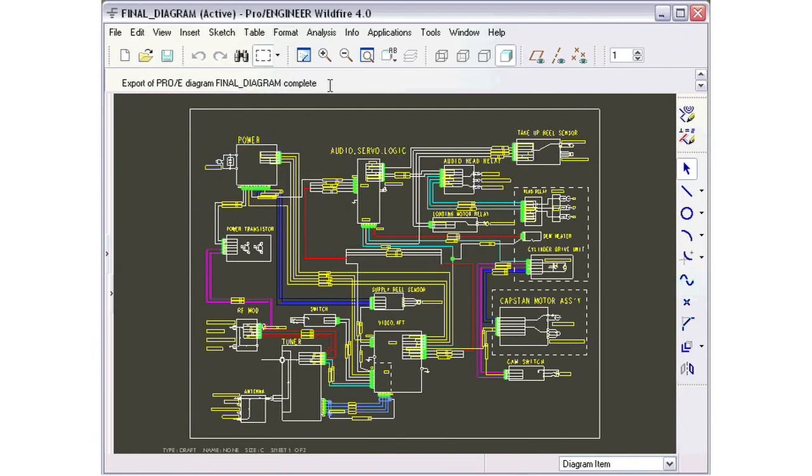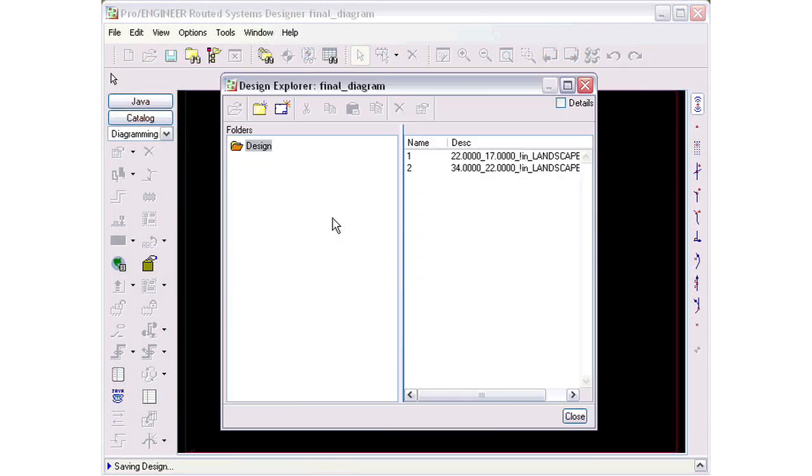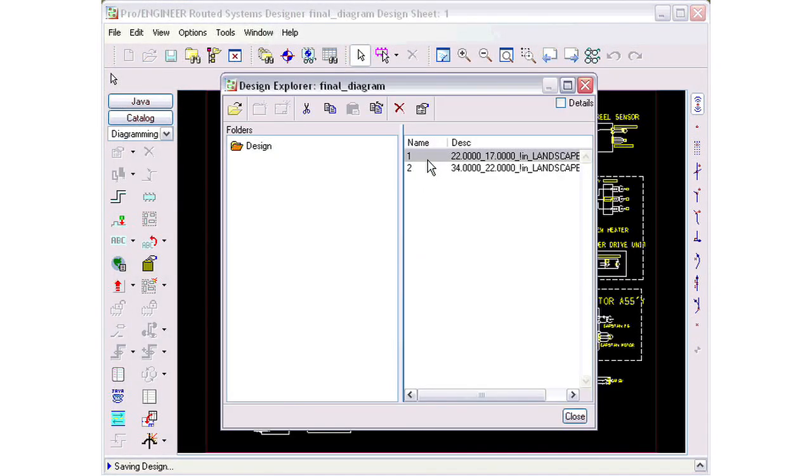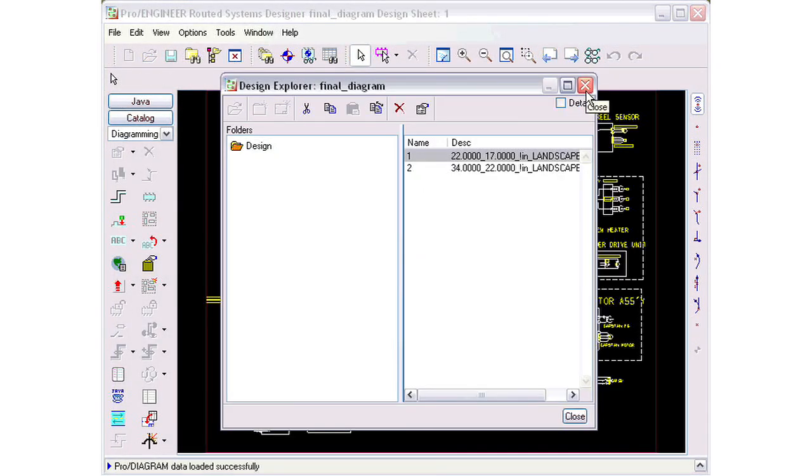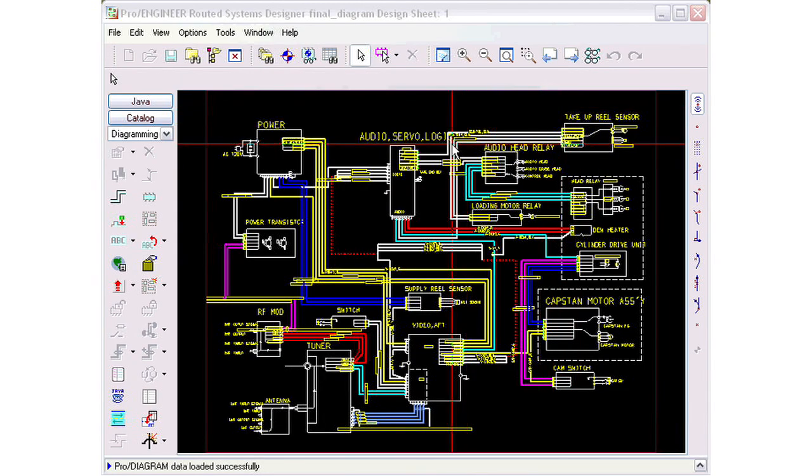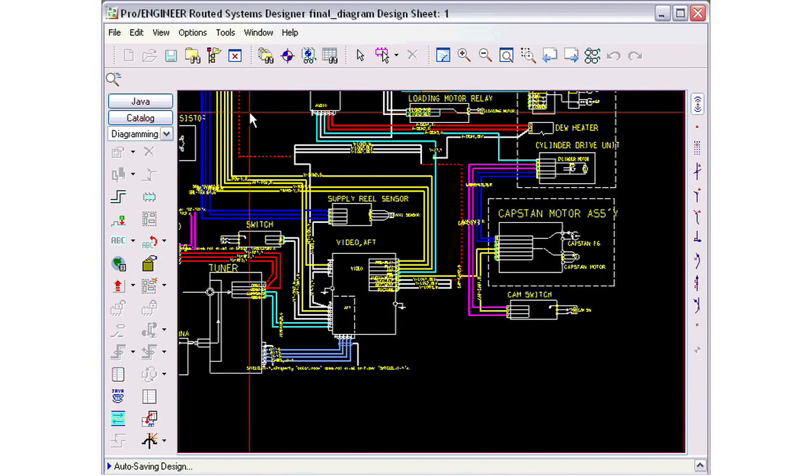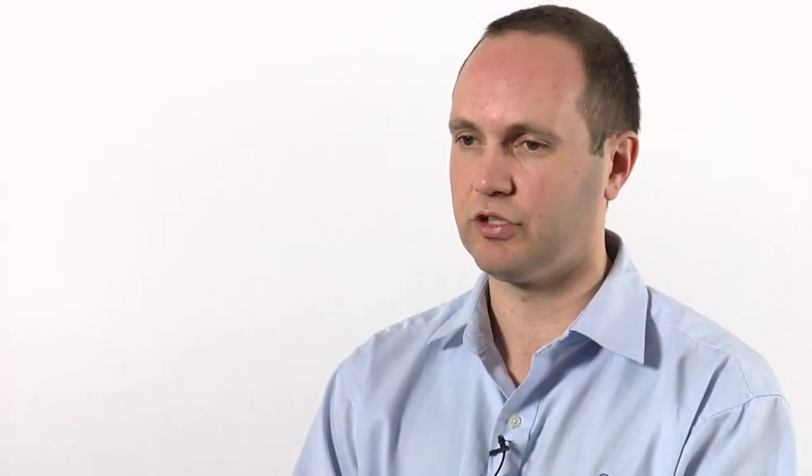So when you have your design sheets, all the items that were placed on the design sheet have the same location, they have the same graphical representation. All the logical information is retained: the from-to information, your design properties, your design parameters, and so on.